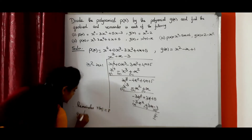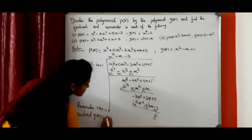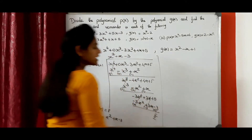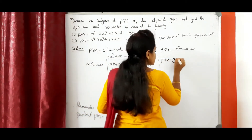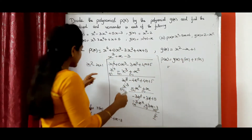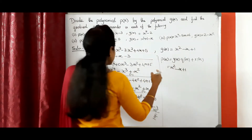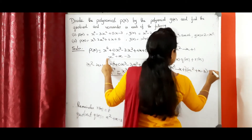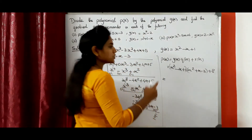Therefore, remainder R of X equals 8. And the quotient Q of X equals X square plus X minus 3. Now we can do the verification using the division algorithm. The division algorithm states: P of X equals G of X into Q of X plus R of X. G of X is X square minus X plus 1, Q of X equals X square plus X minus 3, plus R of X equals 8. Then we need to do the multiplication.